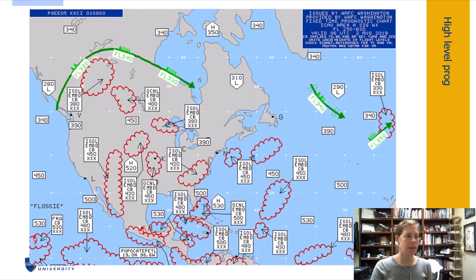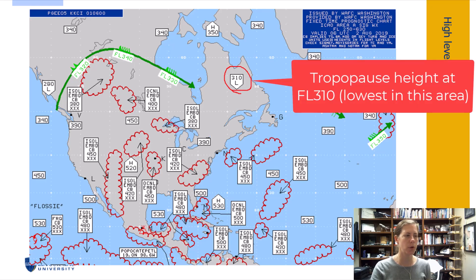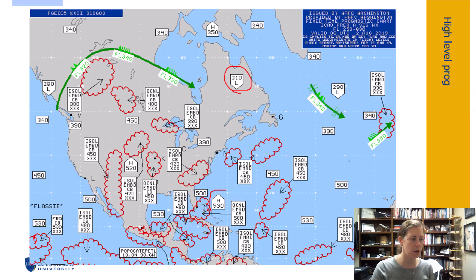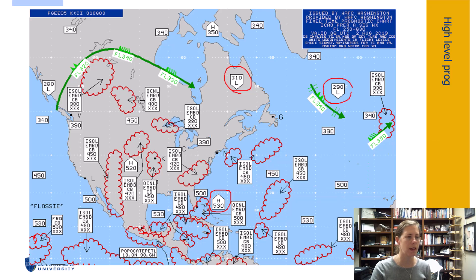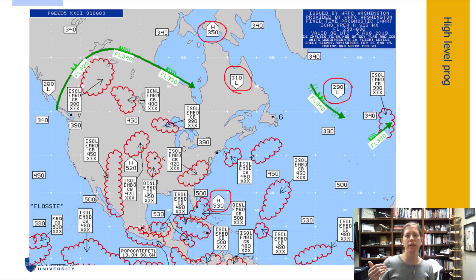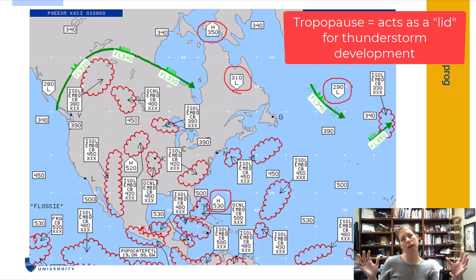Another interesting thing you can find on here is tropopause heights. Here is a low — the lowest part of the tropopause is up at 31,000 feet. The highest part is indicated by a little home-plate-looking symbol. The high is at 530, meaning 53,000 feet. There's another low over the North Atlantic at 290, and another higher one in northern Canada at 350. So as we talked about, the tropopause in the polar area is only 35,000 feet, while down by Florida it's at 53,000 feet — the tropopause is thicker at the equator and thinner over the poles.